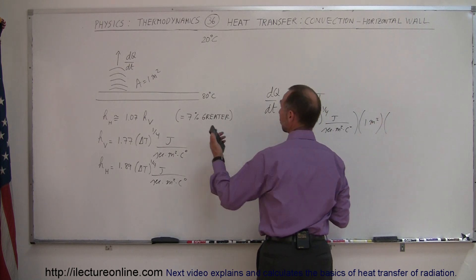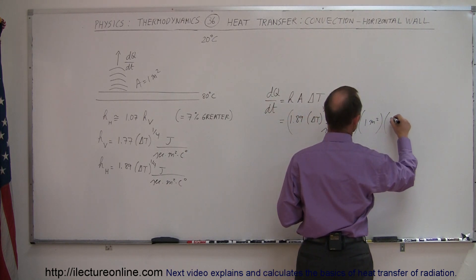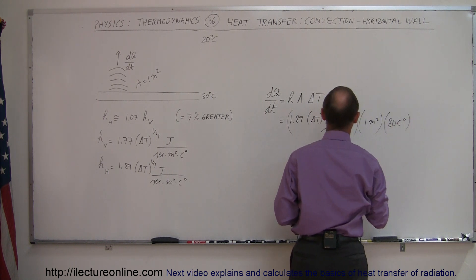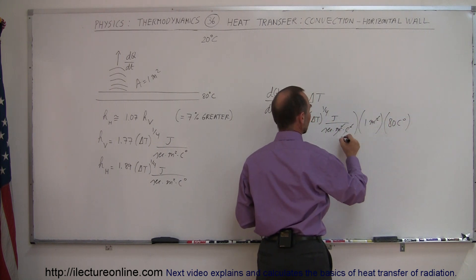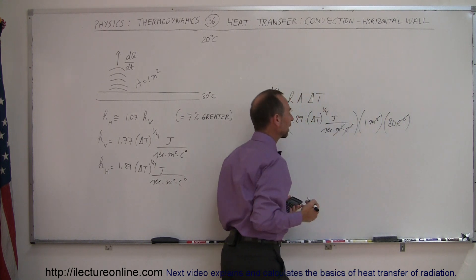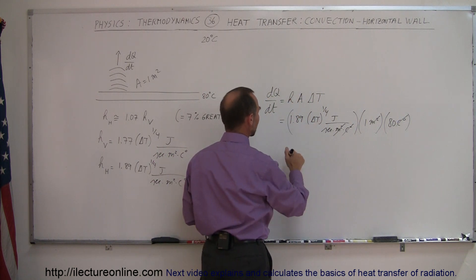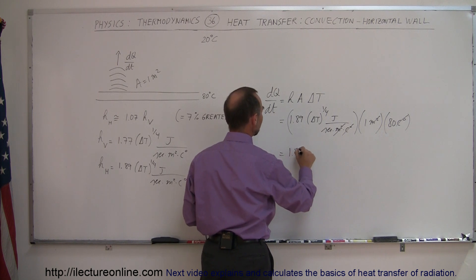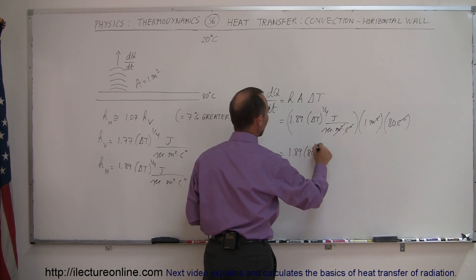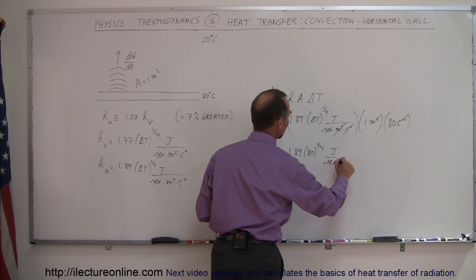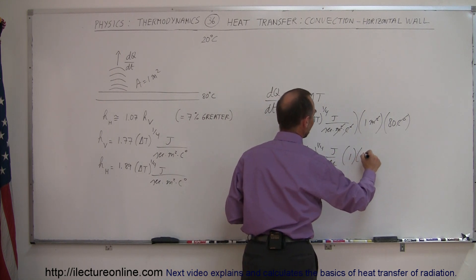And then the difference in the temperature in this case would be 80 degrees centigrade. So 80 centigrade degrees. Notice that the meters squared cancel out, the centigrade degrees cancel out, and we're simply left with joules per second. Of course, don't forget that we have to plug in an 80 right here. So this is equal to 1.89 times 80 to the one-quarter power joules per second. And of course, we have to multiply that times 1 and times 80.